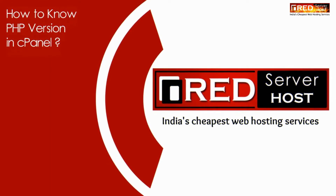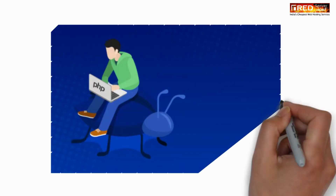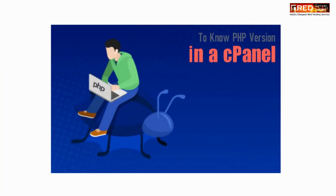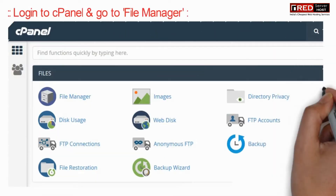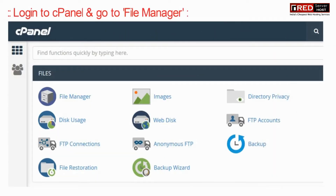Today in this video we will learn how to check the PHP version in cPanel. For that, login to cPanel and then go to File Manager.